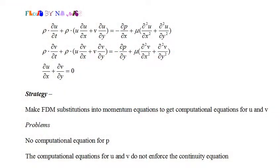We've derived the Navier-Stokes equations and normally at this point we would make the finite difference substitutions for the derivatives and start working through some examples. However, we have a sticky wicket in this instance. We can make the substitutions into the momentum equations and get computational equations for the velocities u and v.